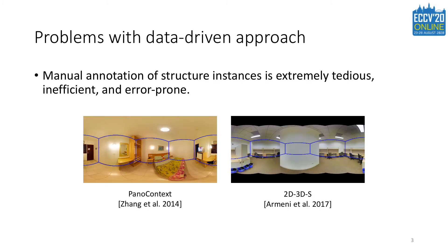Take the panorama room layout estimation benchmark as an example. Since the room structure may be occluded by furniture and other objects, the ground truth inferred by humans is not always consistent with the actual room layout. In the left image, the room is a non-cuboid layout but the ground truth is labeled as a cuboid shape. In the right image, the front wall is not labeled as ground truth. These examples illustrate the limitation of using real datasets as benchmarks.